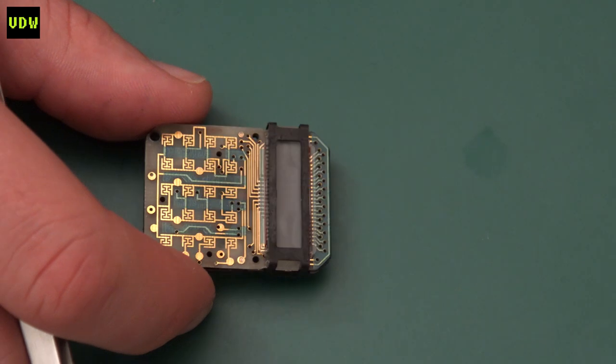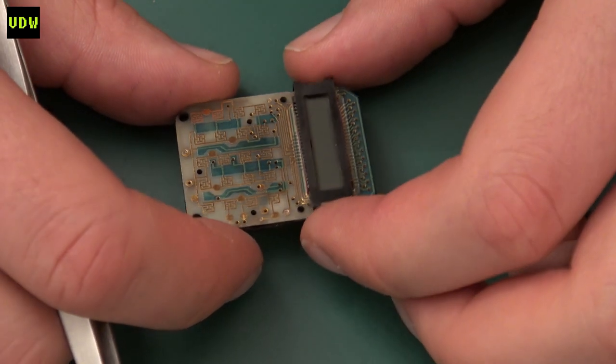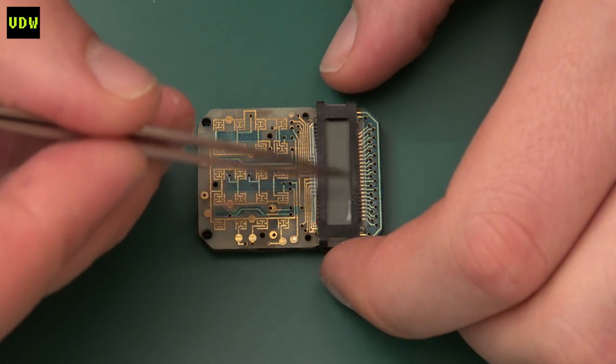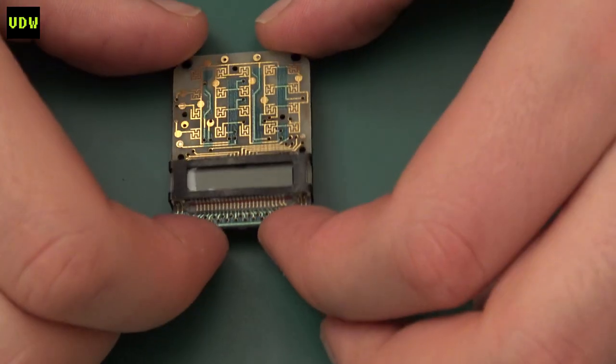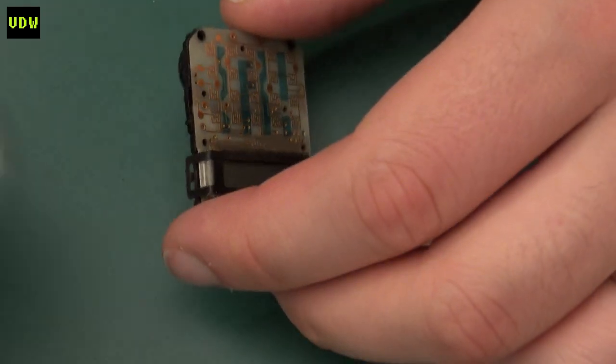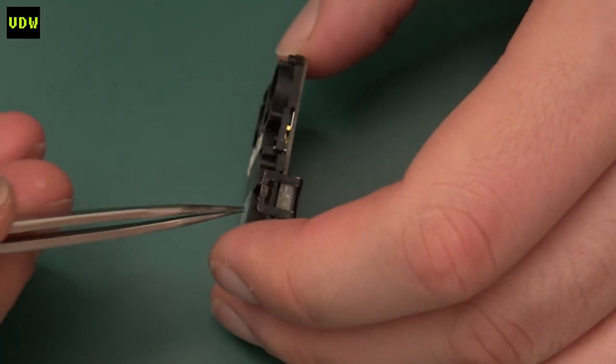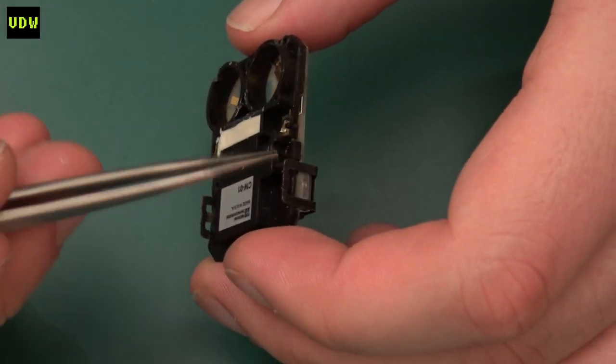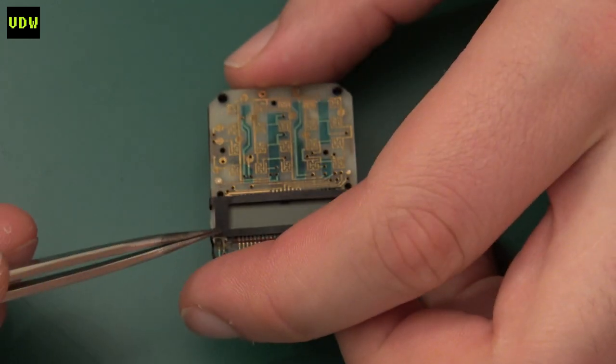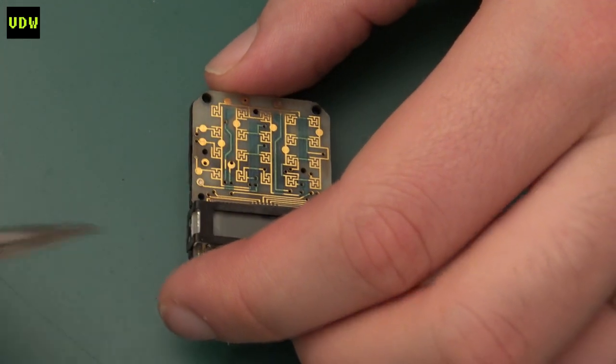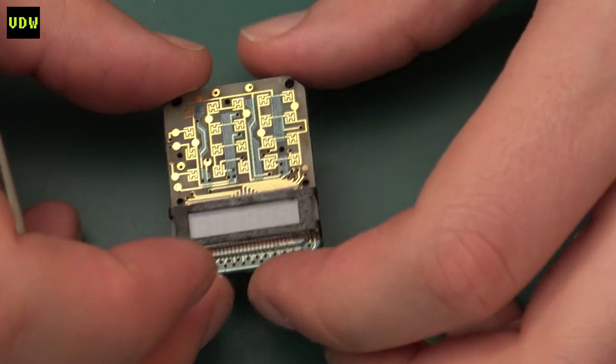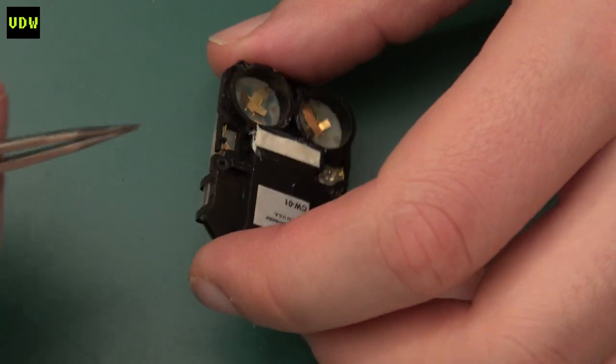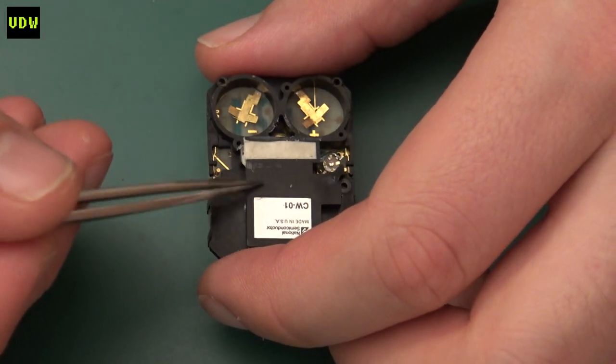And there we go, that is the module removed. Pretty simple construction with a very simple LCD. Now I'll have to do some inspecting under the microscope because I can see that this plastic cradle is being held in with these retainers that also appear to retain the LCD in place. I want to make sure I see exactly how the construction is put together before I try to lift up this protective cradle.